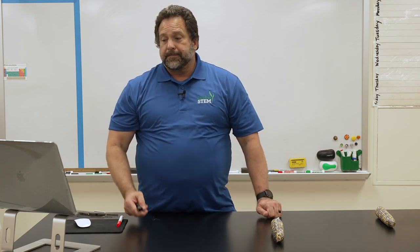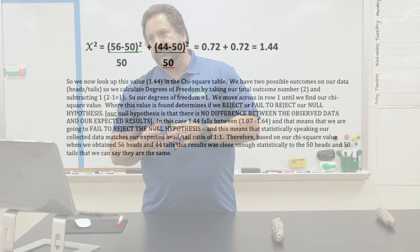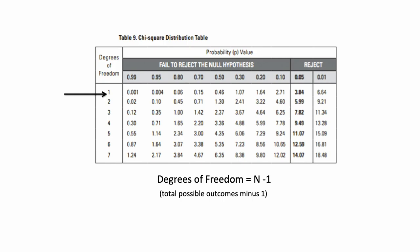This is an example of how we use Chi-Square to determine if 56 to 44 is the same thing as 50 to 50. The Chi-Square formula is: observed minus expected, that difference squared (to eliminate positives or negatives), divided by the expected. When we go through that calculation, we get a Chi-Square value of 1.44.